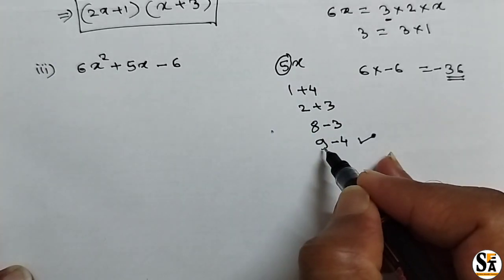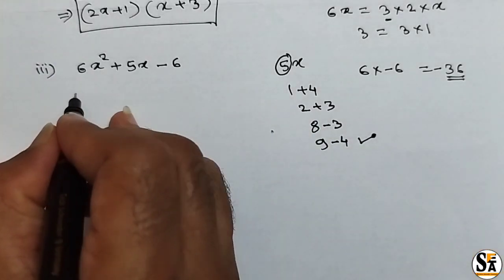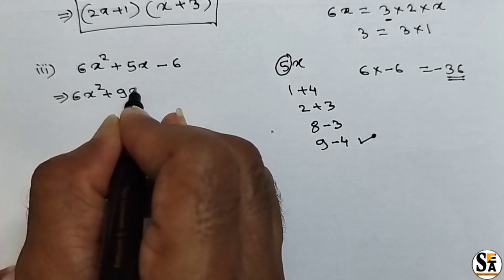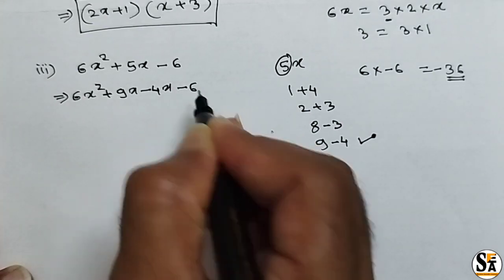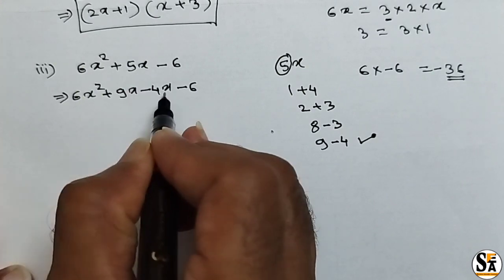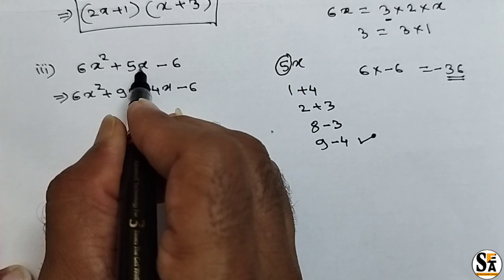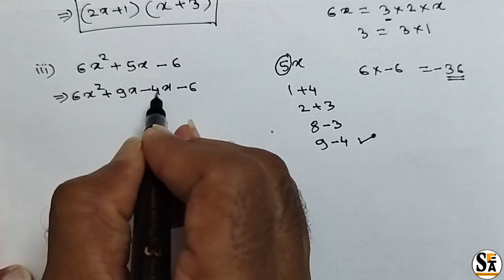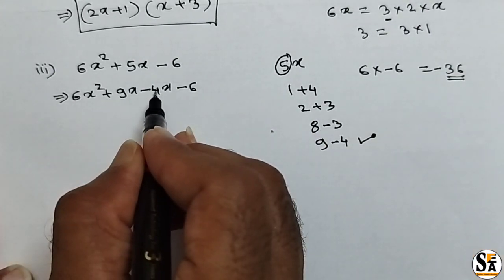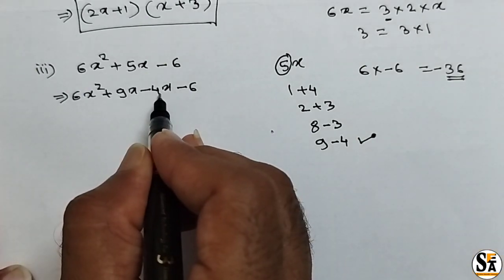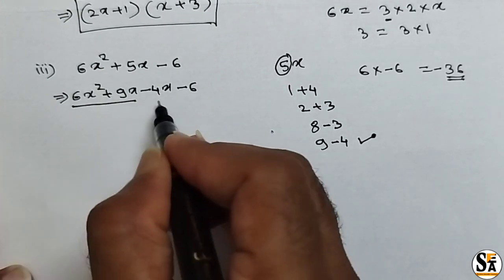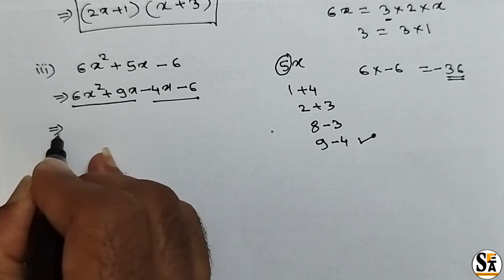We can split 5x as 9x minus 4x. So write in the next step: 6x squared plus 9x minus 4x minus 6. We have to split 5x such that addition of factors equals 5x and multiplication equals 6 into minus 6, that is minus 36. Here 9 into minus 4 is minus 36, so these factors satisfy our condition. Now there are four terms; make a group of the first two and the last two.